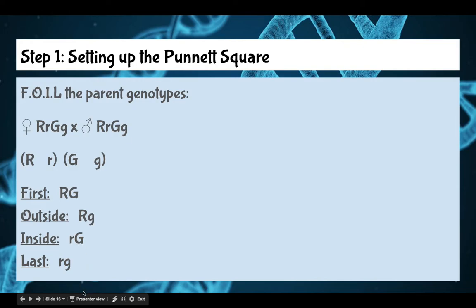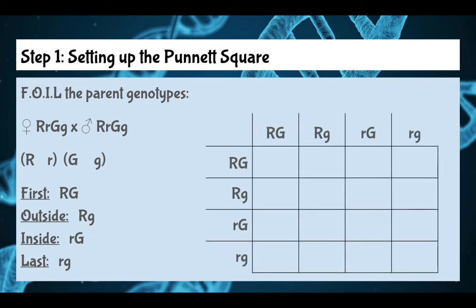We would do the same for the dad, but we're going to cut out doing all the FOIL again because dad's the exact same genotype as the mom. If dad were different, we would have to do FOIL all over again. Now we're going to take each of these groups of letters and put them on the side of the Punnett square. This time we're using a 16-square Punnett square, so it's double the size—it's got two more columns and two more rows than the four-square that we've been using.